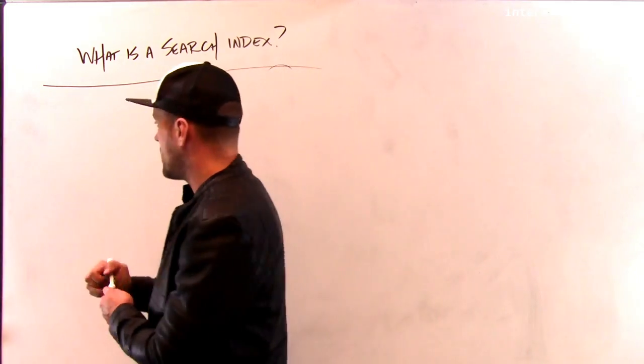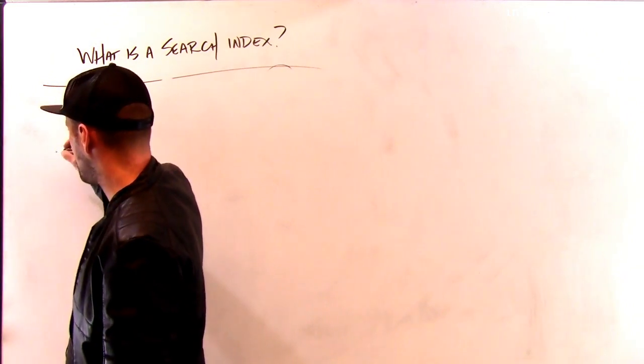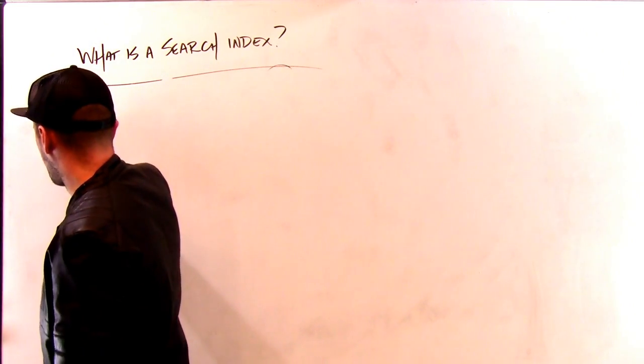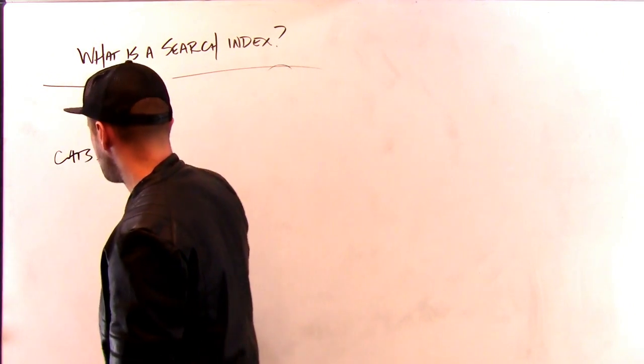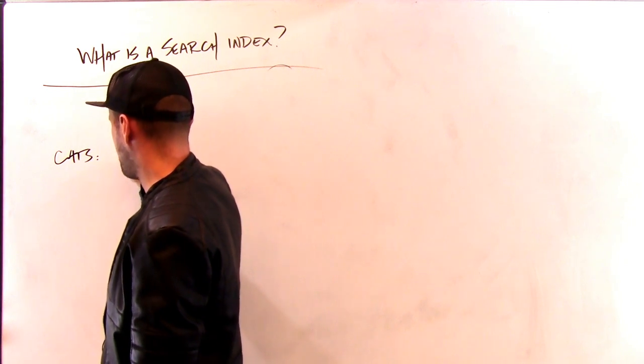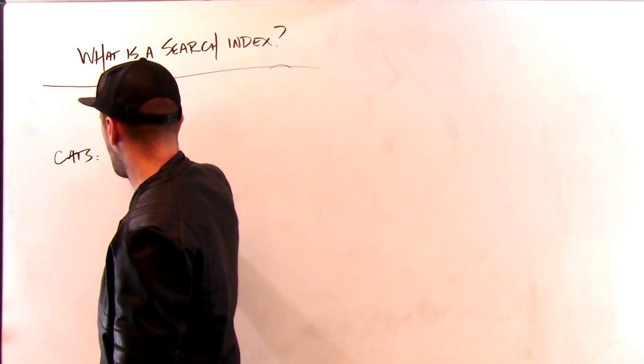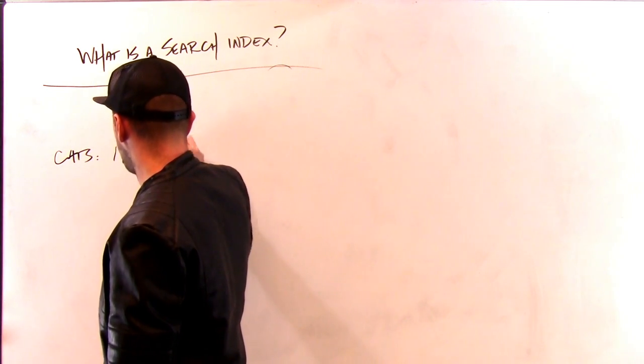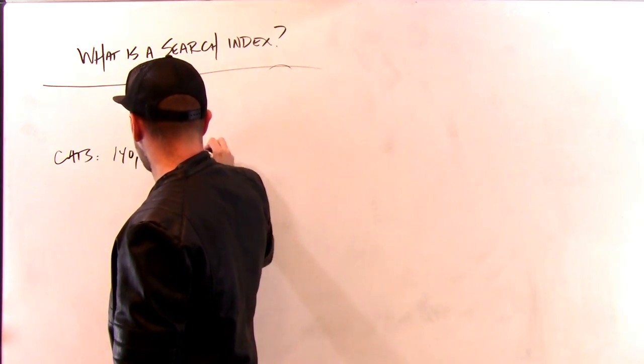So an index in a book, it might look something like this. So it's alphabetized and it might say something like cats. And then it might give you a list of page numbers. It might say 140, 240 to 242, etc.